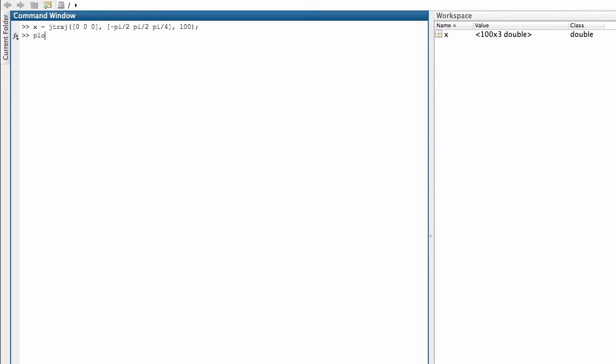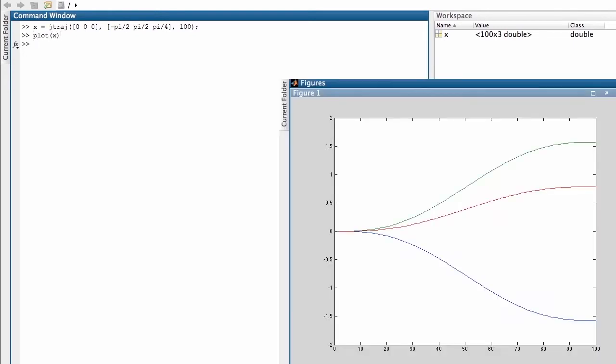I can plot these roll-pitch yaw angles versus time. Here we can see what they look like moving smoothly from the initial value to the final value.